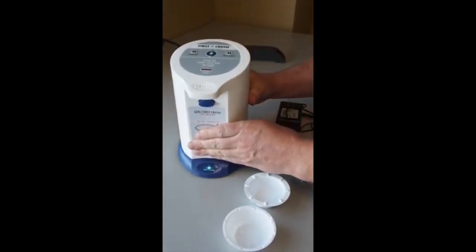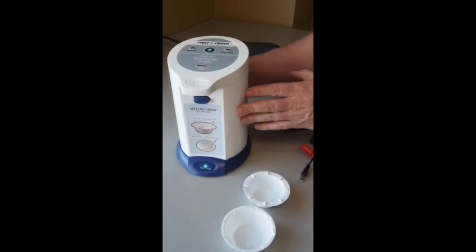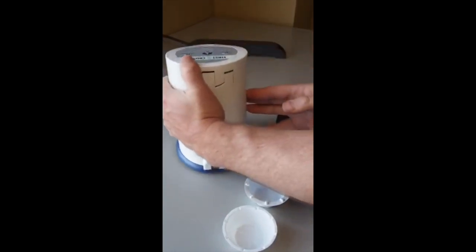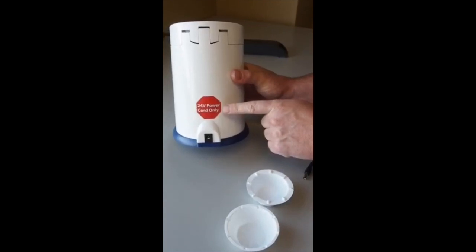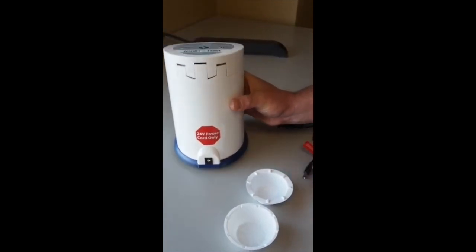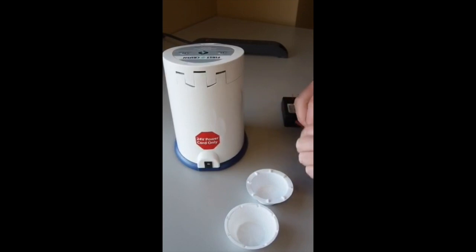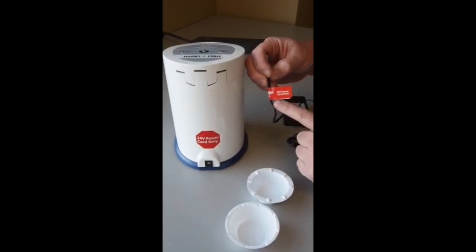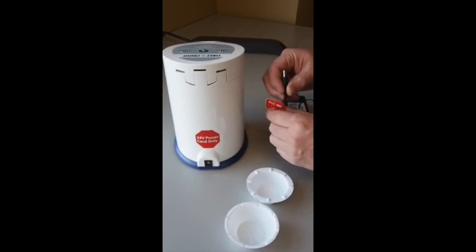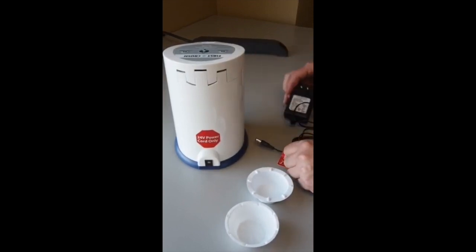To use the rechargeable battery, you will plug it in each evening. It requires only one charge per day, as you should get over 300 crushes on a fully charged battery. To ensure you're using the correct power cord, you'll want to check to make sure that the red sticker on the power cord matches the red sticker on the back of the pill crusher.